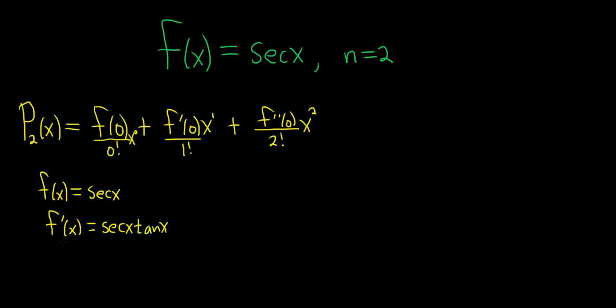And now we have to find the derivative again. So this is going to require a product rule. So the second derivative. Let's think of this as the first piece and this as the second piece.